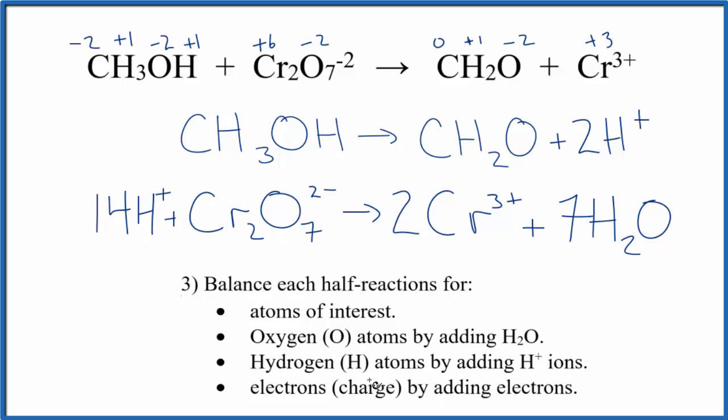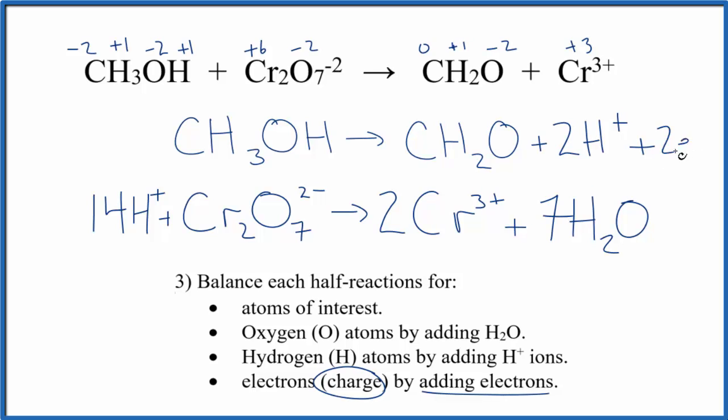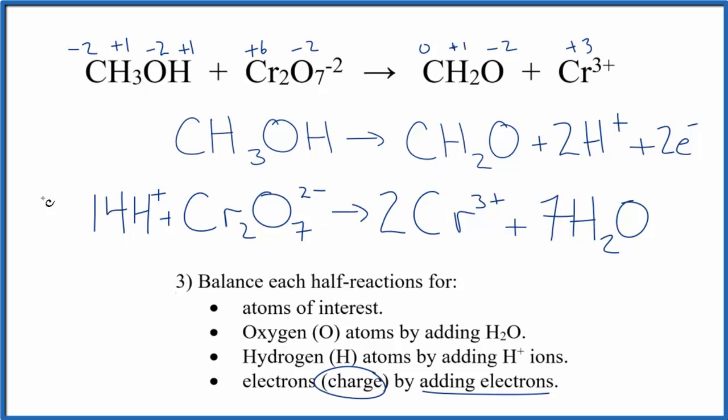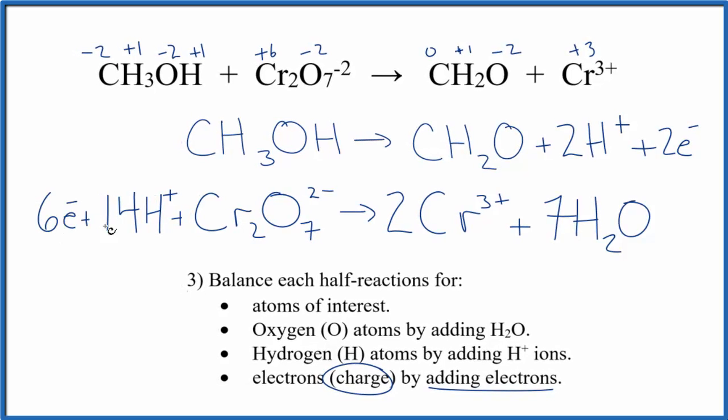Finally we're going to balance the charge by adding electrons to each side. So here I have 2 plus. Let's add 2 electrons there. That balances the charge. Over here it's a little bit more difficult. I have 14 plus and then the 2 minuses for the whole thing. So I have 12 plus in the reactants. 2 times 3 pluses, 6 plus. So 12 plus here, 6 plus here. If I add 6 electrons over here, that'll balance the charge. The charge will be the same on both sides.